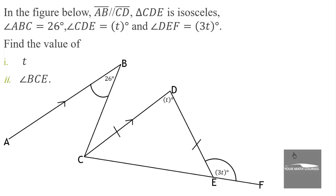The final question: in the figure, line segment AB is parallel to line segment CD. Triangle CDE is isosceles. Angle ABE is 26 degrees, angle CDE is t degrees, and angle DEF is 3t degrees. Find the value of t.